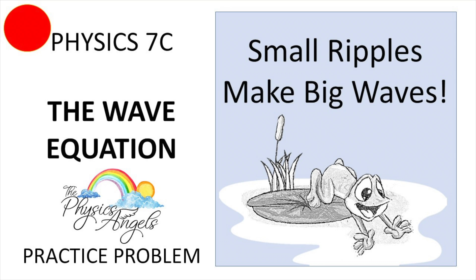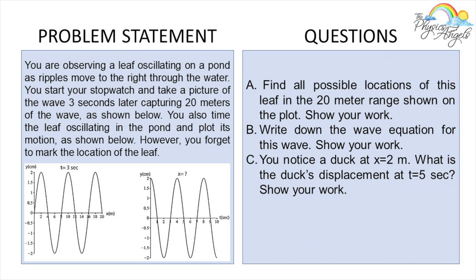However, this is a quiz, so you forgot to mark the location of the leaf. Part A: find all possible locations of the leaf in the 20-meter range shown on the plot. Part B: write down the wave equation for this wave. Part C: you notice a duck at x equals 2 meters — what is the duck's displacement at t equals 5 seconds? Show your work.